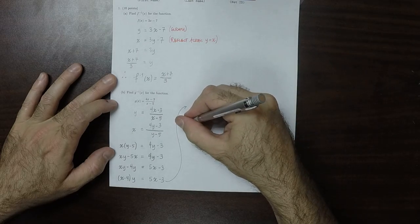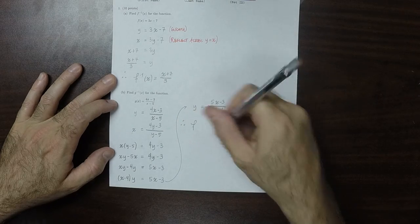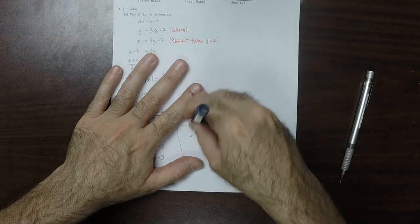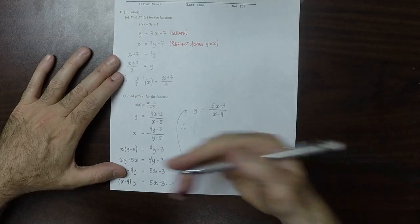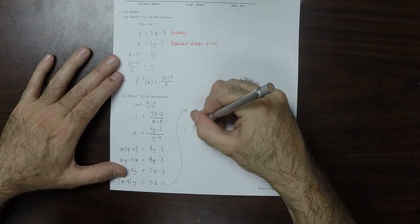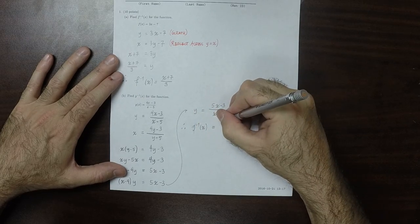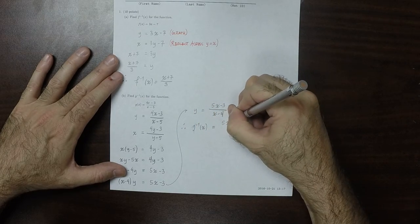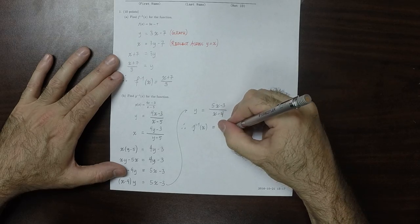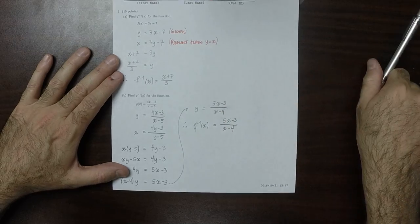And therefore, the inverse function of g is 5x minus 3 divided by x minus 4.